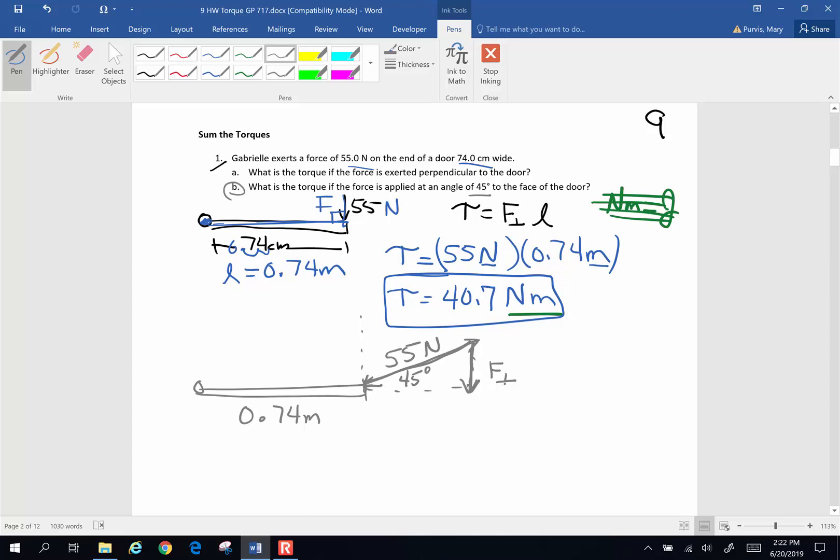And in order to find that force perpendicular, this is going to be the opposite side. So I'm going to use sine. So the force perpendicular is going to be my 55 Newtons times, in order to find this vector,